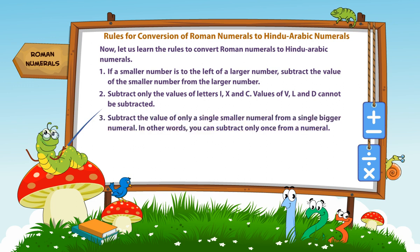Rule number 3. Subtract the value of only a single smaller numeral from a single bigger numeral. In other words, you can subtract only once from a numeral.